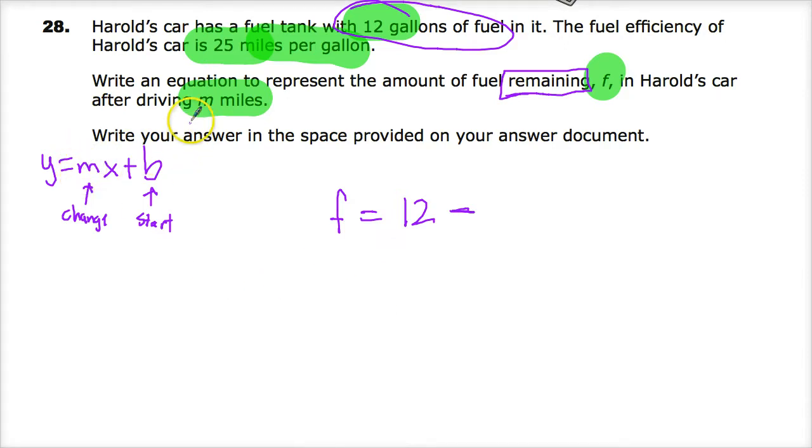Now, 25 times miles doesn't make any sense. So I have to think, what's the perspective of the question? For me, I'm thinking, how do I get down to 11 gallons? What would make that possible? How is this 25 related?